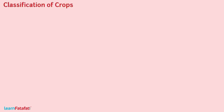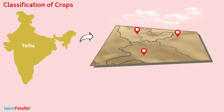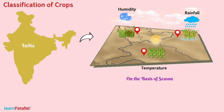Classification of Crops. India is a very big country. From region to region, we can find different climatic conditions like temperature, humidity, and rainfall. Since different crops require different climatic conditions for their growth, we can find a variety of crops from region to region. On the basis of season, we can classify crops into two cropping patterns.